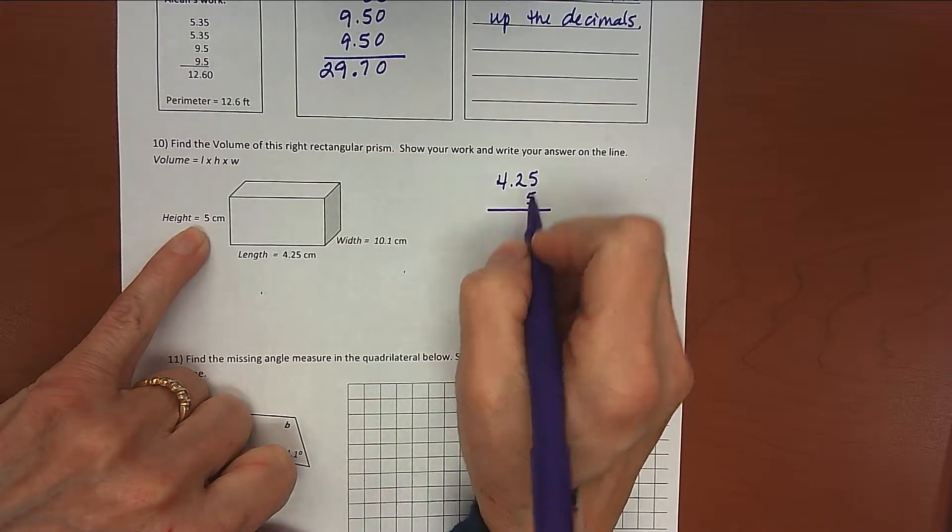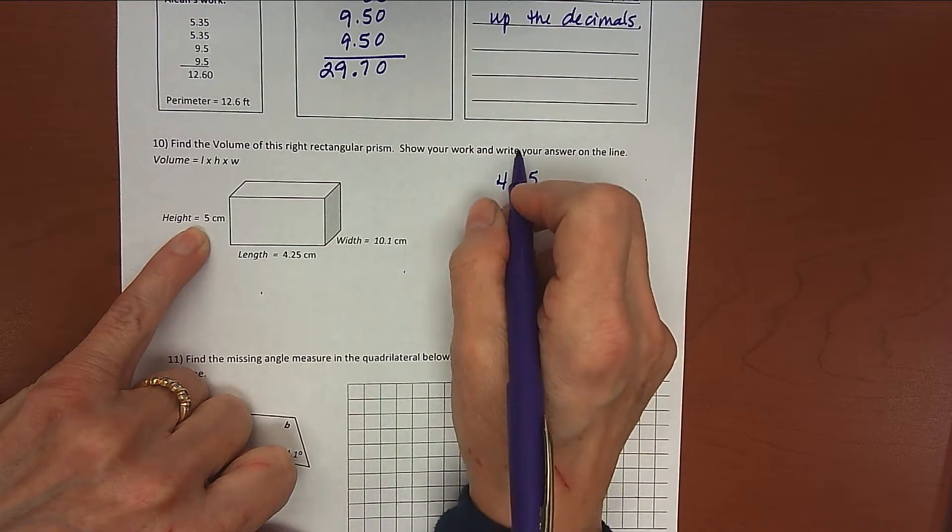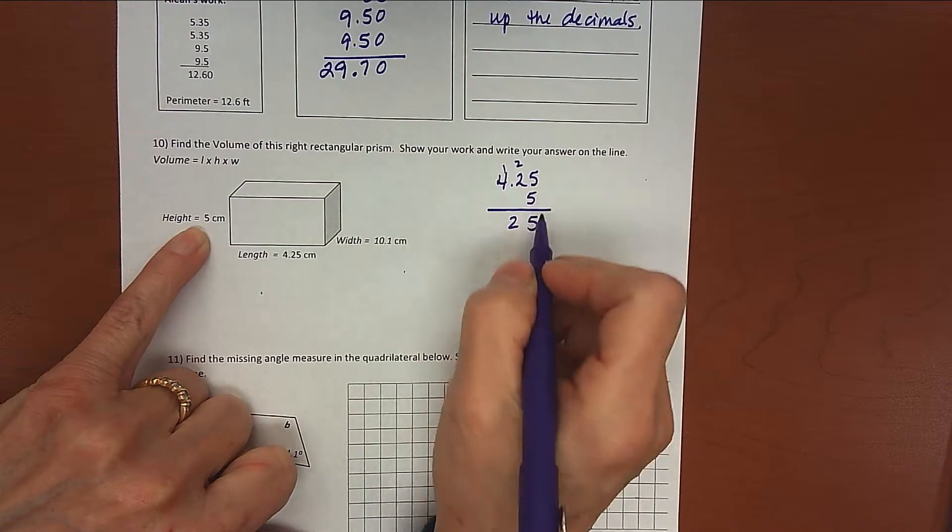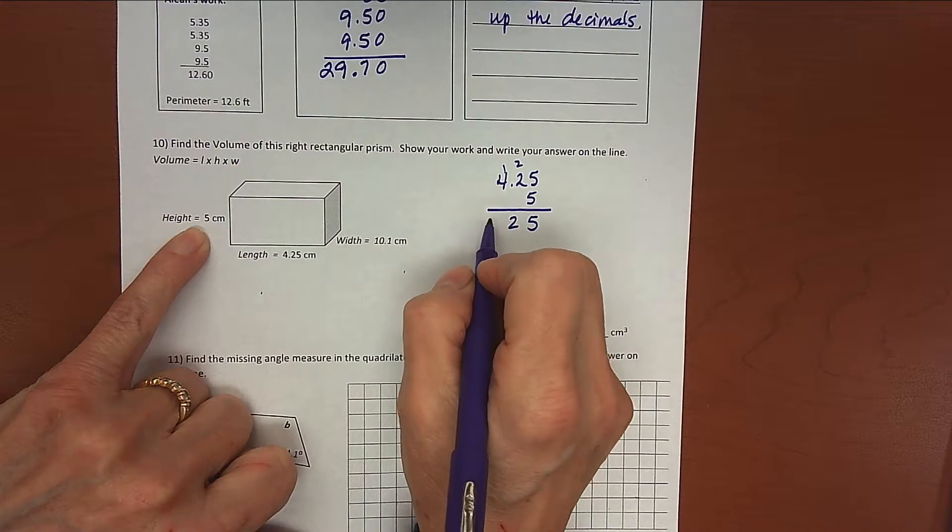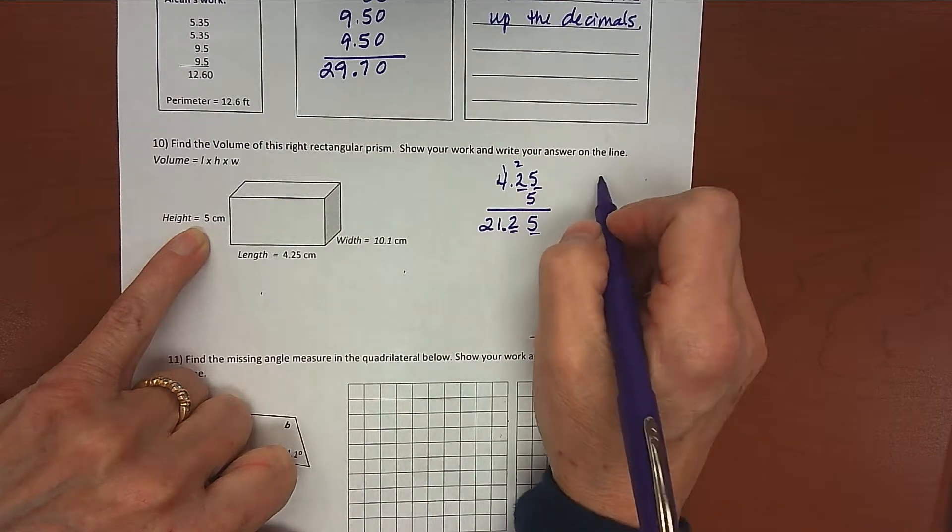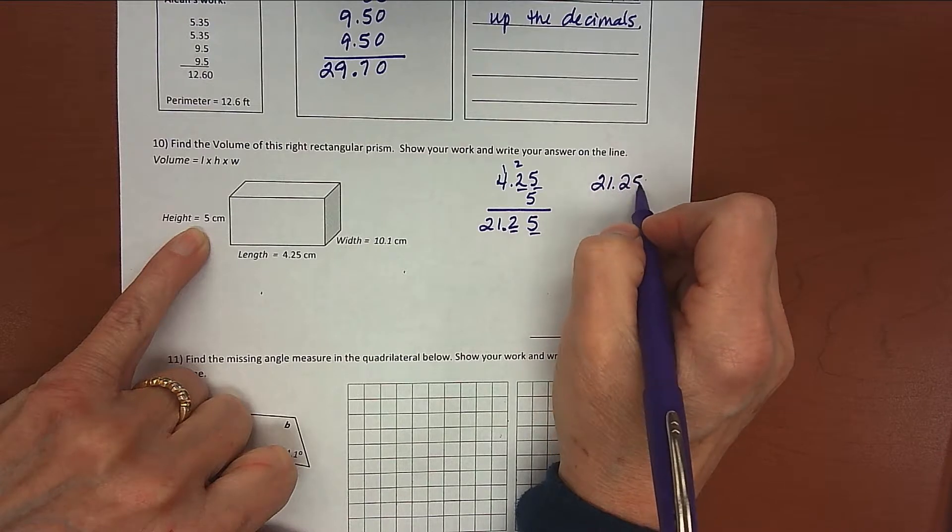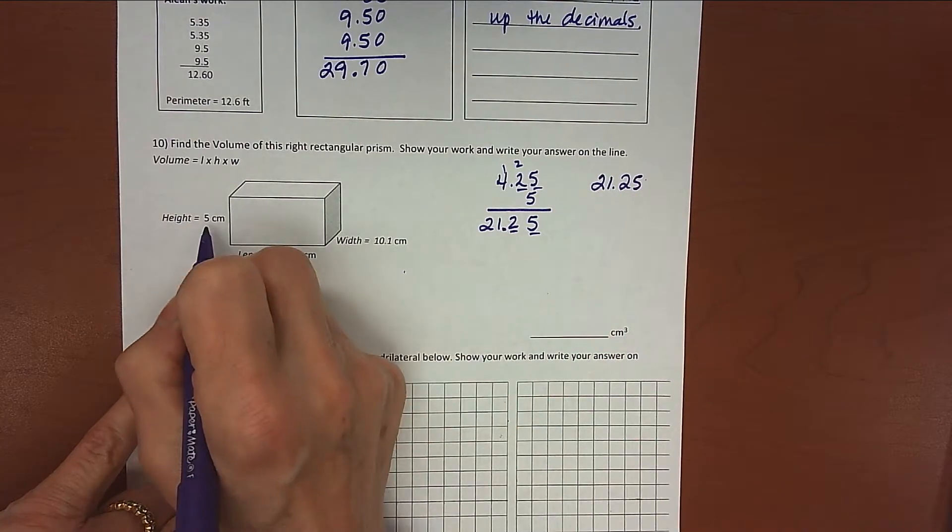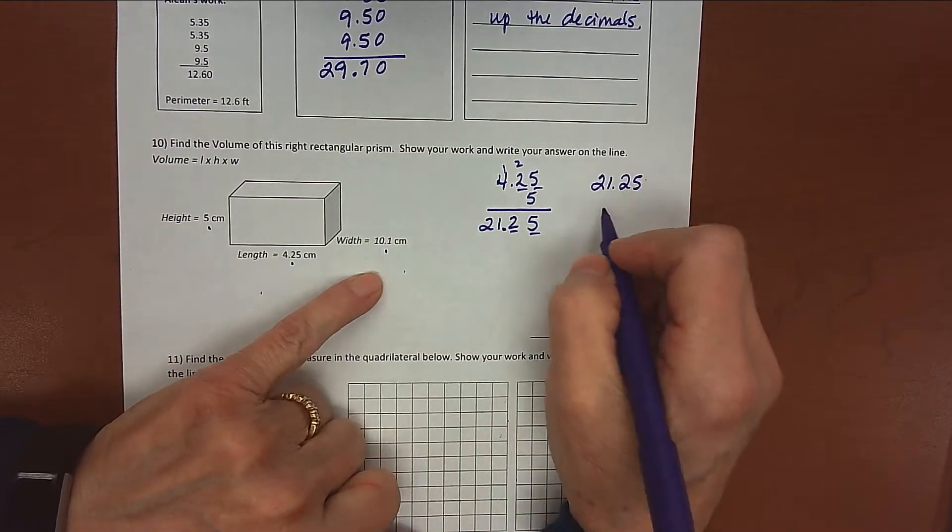5 times 5 is 25, carry my 2. 5 times 2 is 10, plus 2 is 12, carry my 1. 5 times 4 is 20, plus 1 is 21. Place my decimal point. So I've got 21 and 25 hundredths, and I've taken care of this value and this value. Now I need to multiply in the 10 and 1 tenth.